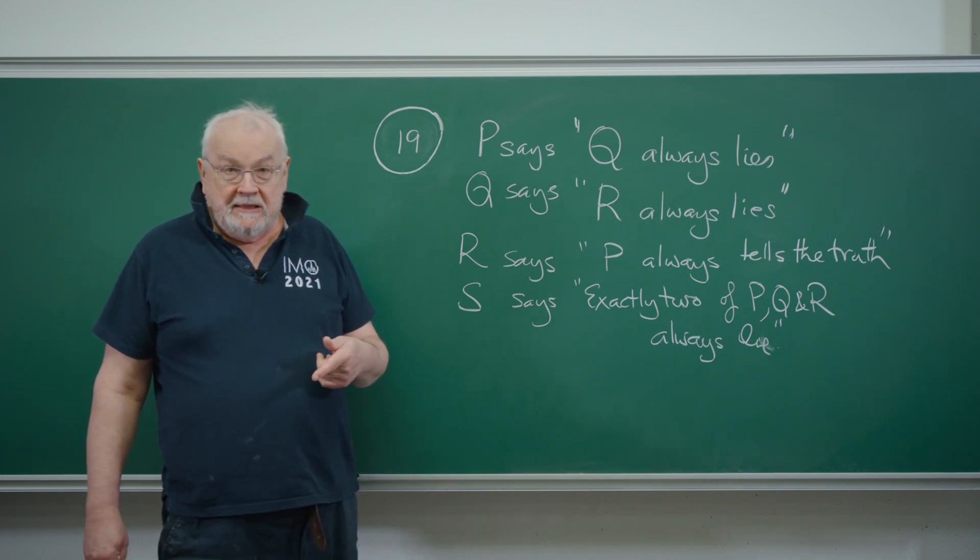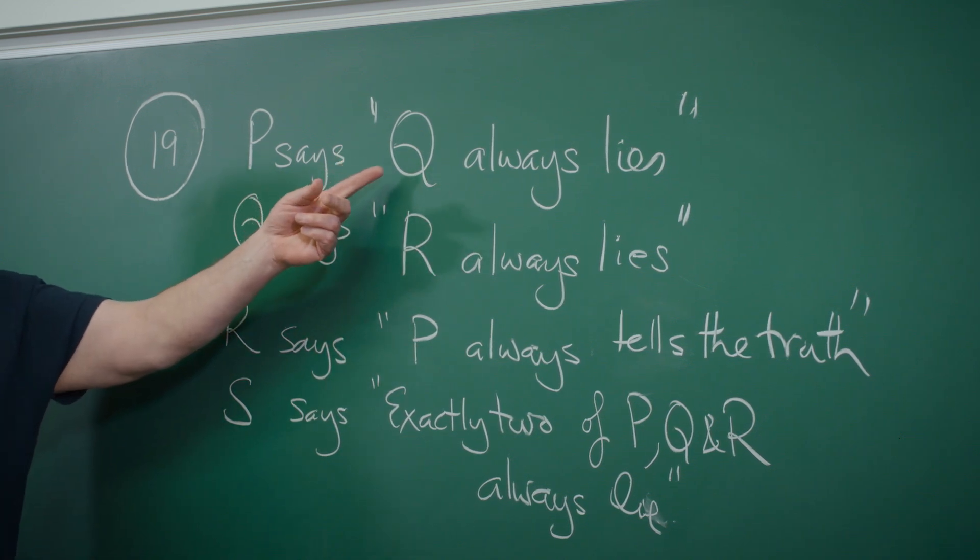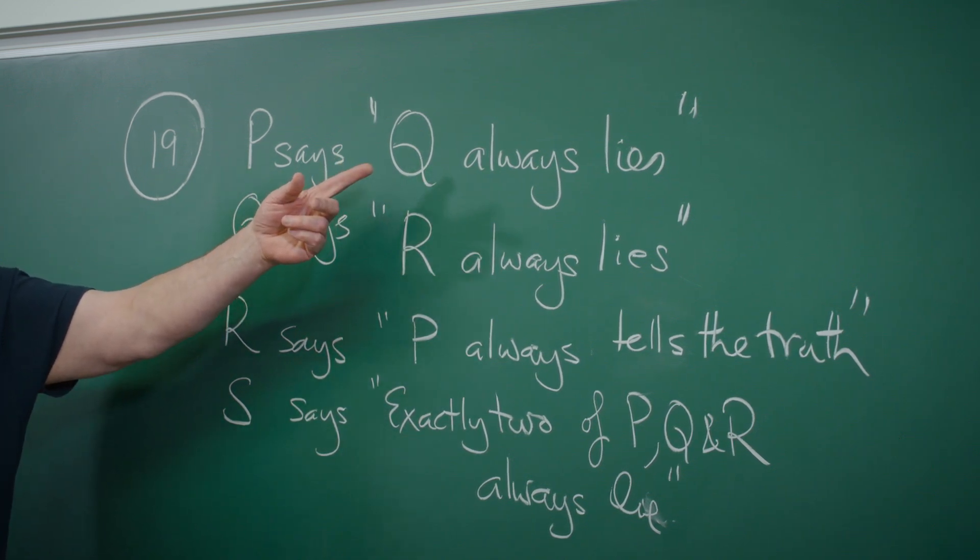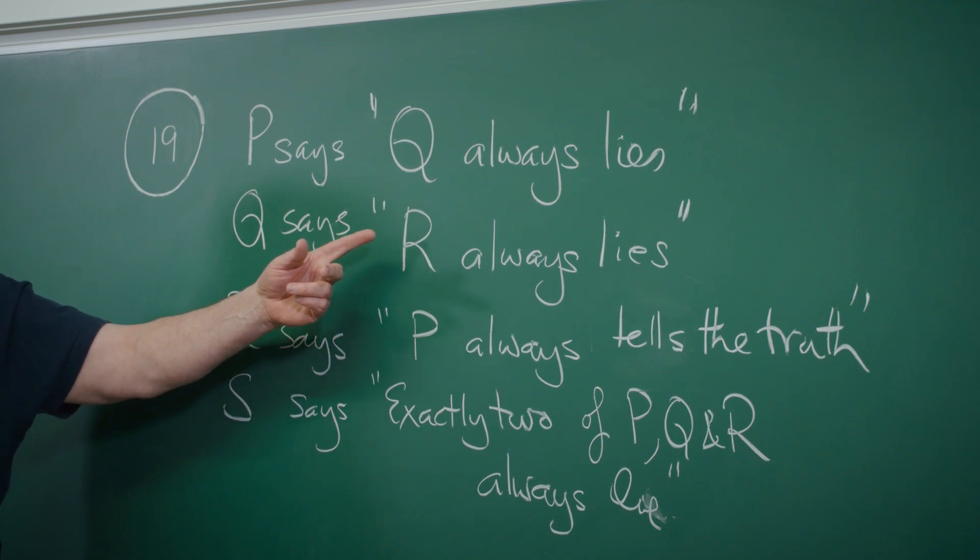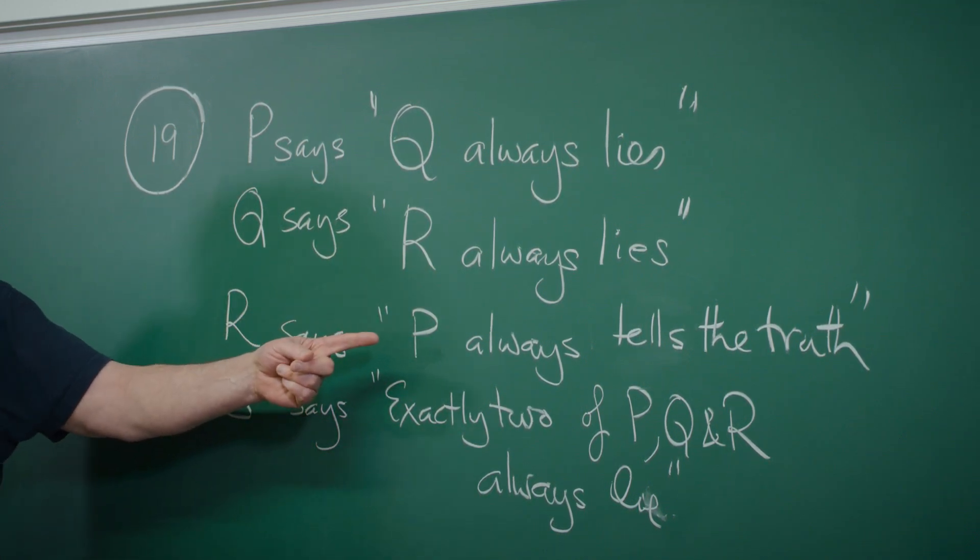So what does the question say in this language? P says Q is a liar, they always lie. Q says R always lies. And R says that P is a truth-teller, P always tells the truth.